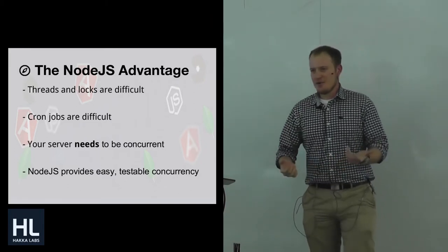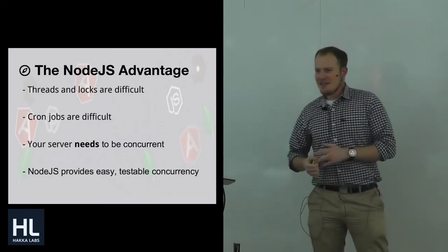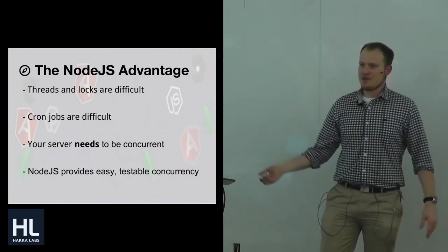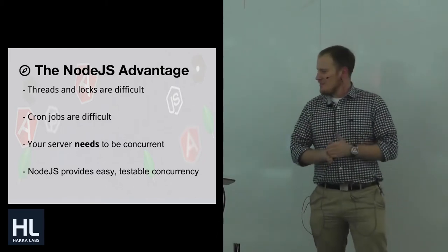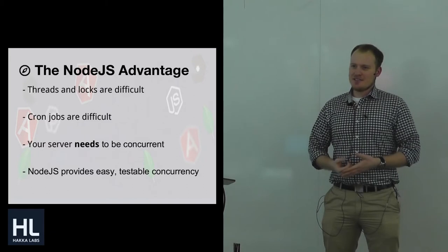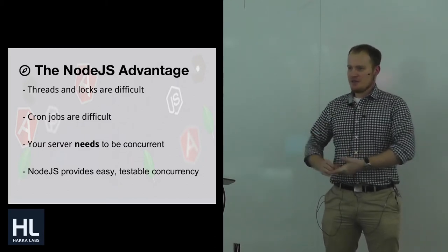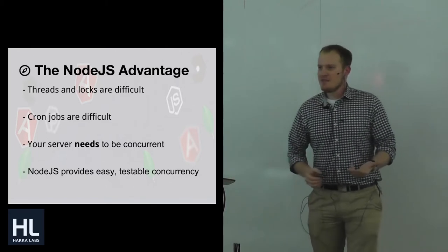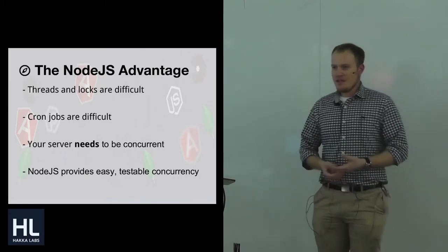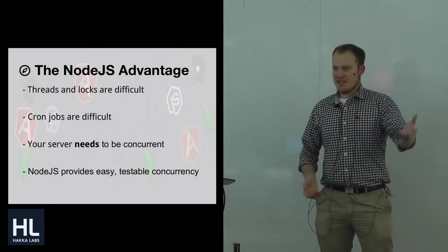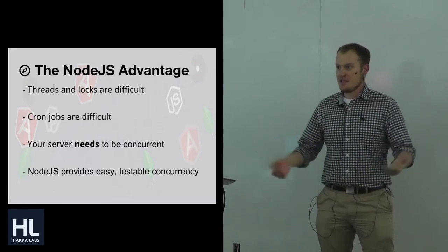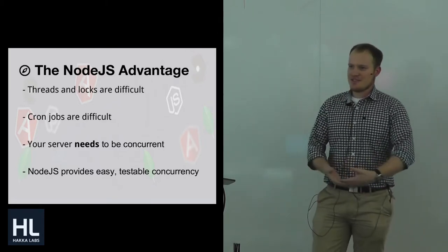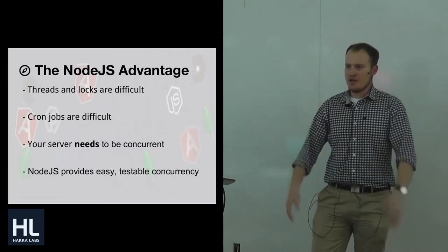Threads and locks are not very easy to work with. They cause a lot of opportunity for bugs and are difficult to test. Furthermore, cron jobs are a pain in the ass. If I had a dollar for every time I got bitten by the bug where cron jobs run under a different user, I would be a very rich man. Your server needs this sort of concurrency. You need to be able to do multi-threaded things, be event-driven, and schedule things.